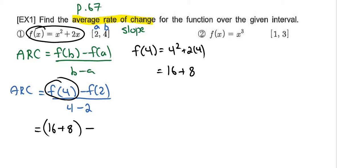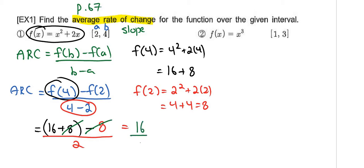Minus, well what's f of 2? f of 2 is going to be 2 squared plus 2 times 2, that's gonna be 4 plus 4 which is 8. So I put an 8 there all divided by 4 minus 2 is 2. This 8 and that 8 cancel off and you're left with 16 divided by 2 which is 8. So the average rate of change is 8.